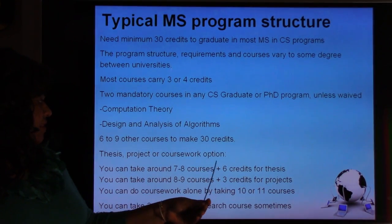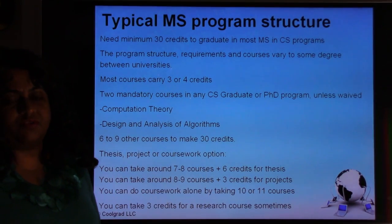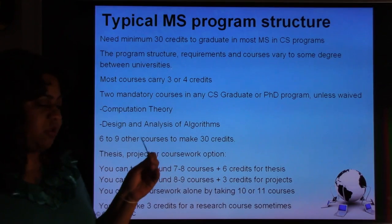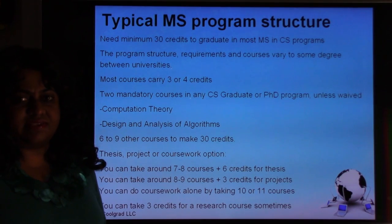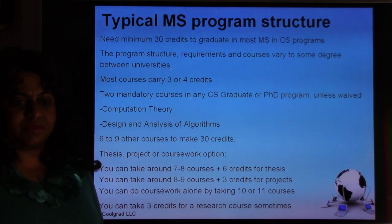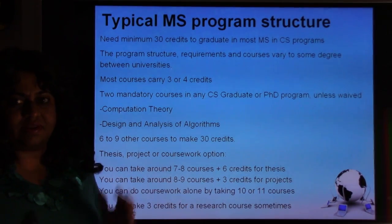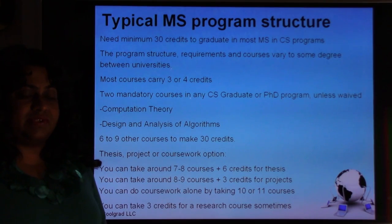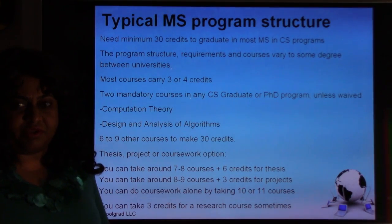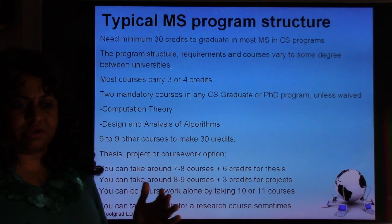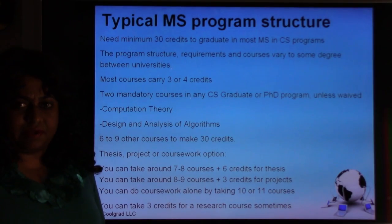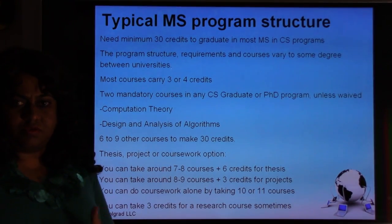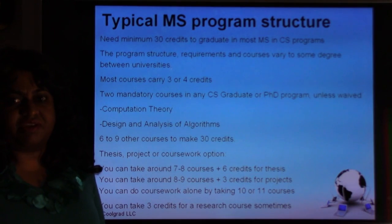In any master's program, there are usually three ways to graduate: a thesis option, a project option, and a coursework option. A thesis is usually six credits, a master's project is usually three credits, and coursework means taking about 10 courses. Some universities require 33 credits for the coursework option, while thesis or project options require only 30. It really depends and varies between universities.